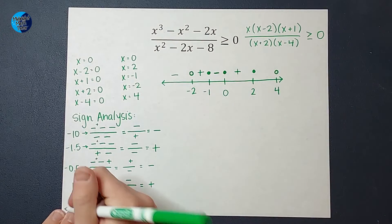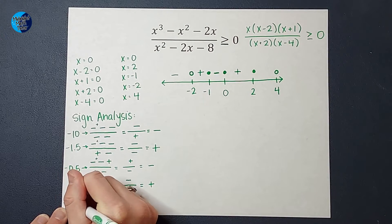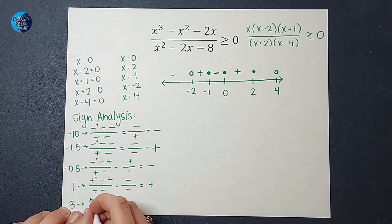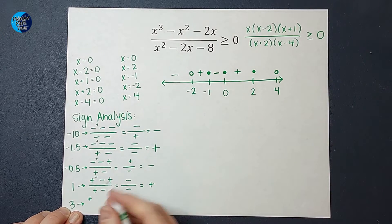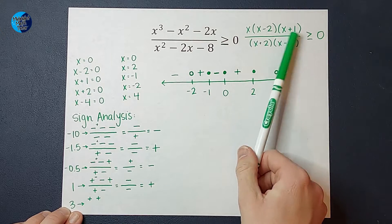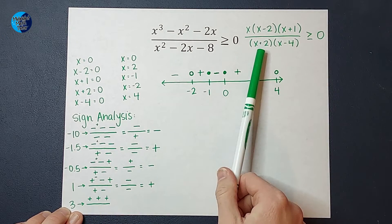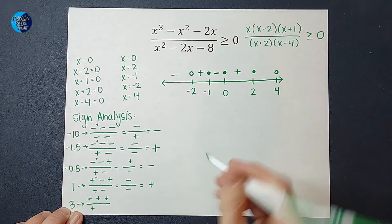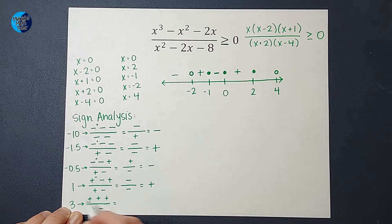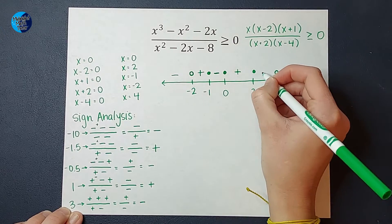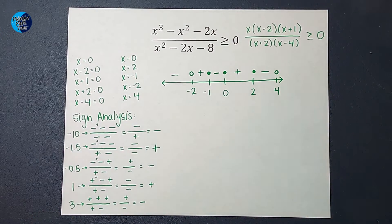Next, pick a number between 2 and 4 — let's pick 3. When I plug in 3 for x, I get positive. 3 minus 2 is positive. 3 plus 1 is positive. 3 plus 2 is positive. 3 minus 4 is negative. Positive times positive times positive is positive. Positive times negative is negative. Positive divided by negative is negative — that region is negative.